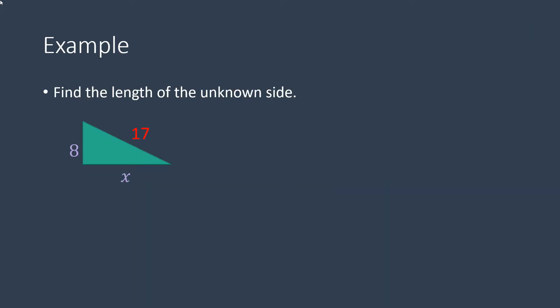So here it says find the length of the unknown side, and you have 17, you have x, and 8, and these are your legs, where 17 is your hypotenuse.